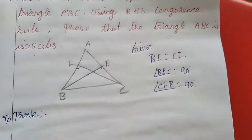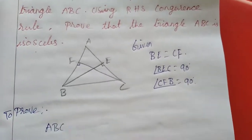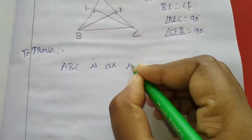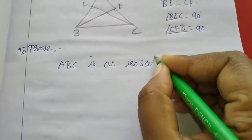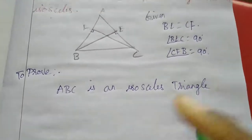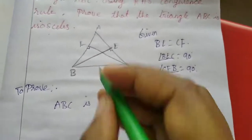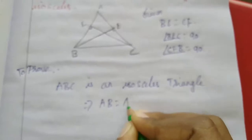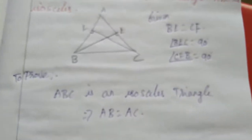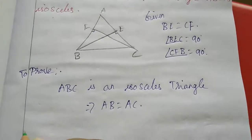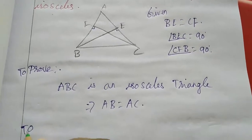To prove: ABC is an isosceles triangle. For that we want to show two sides are equal, so I am going to prove AB equal to AC.